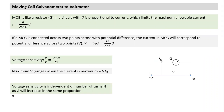When we look at sensitivity, if we increase the number of turns N in an MCG coil, G also increases in the same proportion because resistance depends on the coil. If we go from 100 turns to 200 turns, N doubles and G also doubles. Since they tend to cancel out, voltage sensitivity is independent of the number of turns — unlike what happens with current sensitivity.